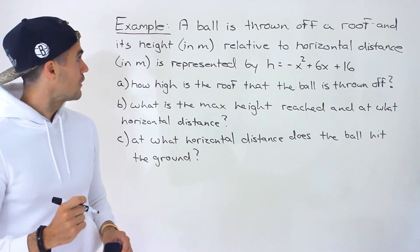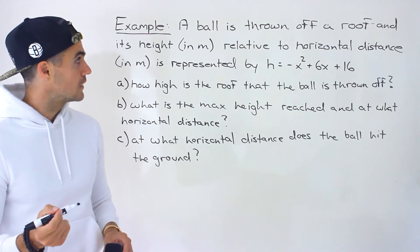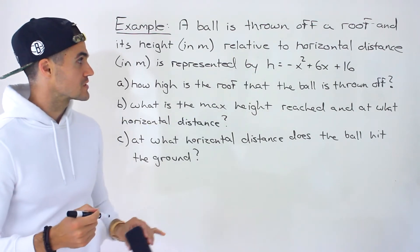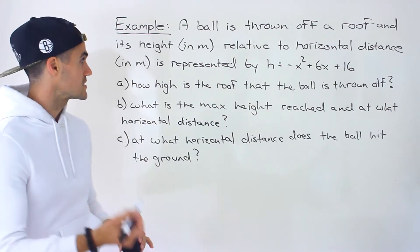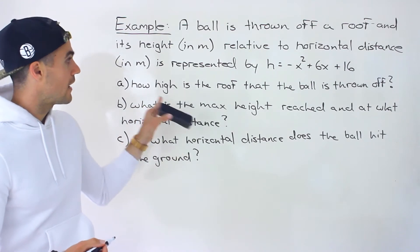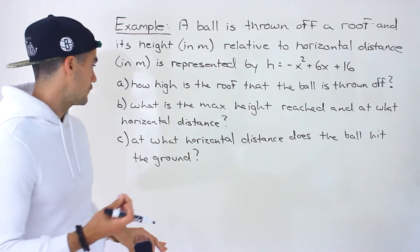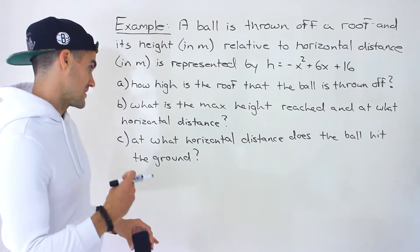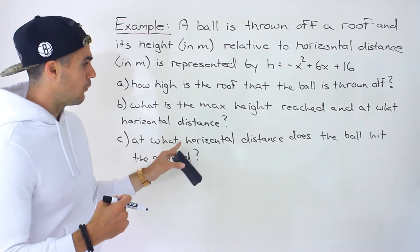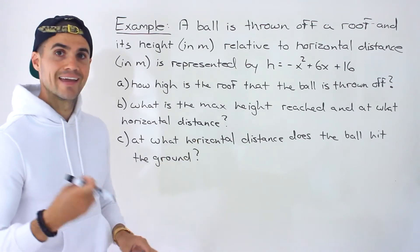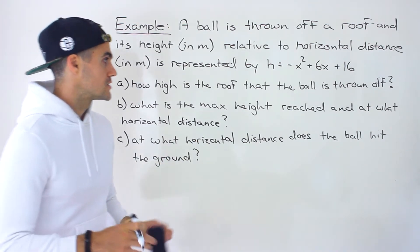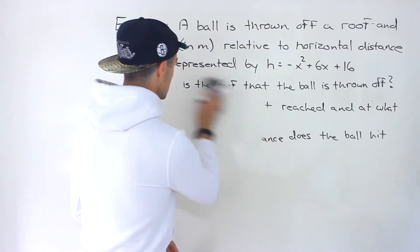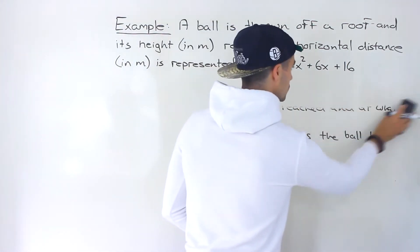We're told that a ball is thrown off a roof and its height in meters relative to horizontal distance in meters is represented by this equation: h = -x² + 6x + 16, and we have to answer these questions: How high is the roof that the ball is thrown off? Part b, what is the max height reached and at what horizontal distance? And then part c, at what horizontal distance does the ball hit the ground?